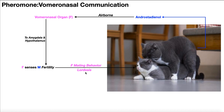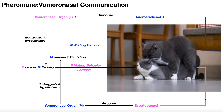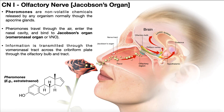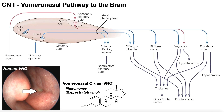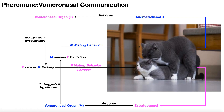This works reciprocally. The female also releases estrotetraenol, which goes airborne and enters the male nostril to stimulate his vomeronasal organ. That information relays to the amygdala, then the hypothalamus, allowing the male to sense that the female is ovulating — indicating a fertile window — and the male will then display stereotypical male mating behavior. Hopefully this video gave you a good understanding of Jacobson's organ, also called the vomeronasal organ, and how pheromones relay subconscious — or in some cases conscious — information to the hypothalamus to influence mating behavior.